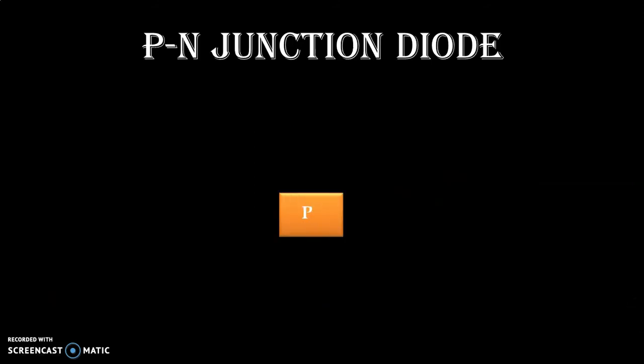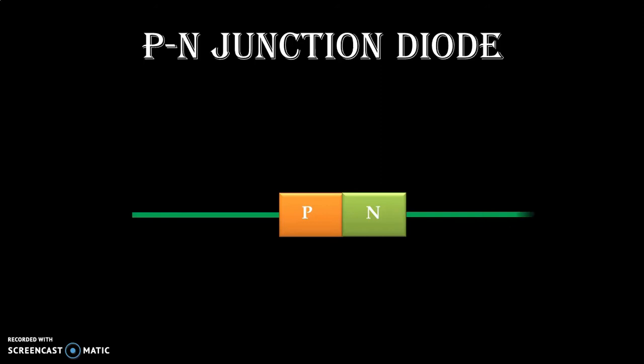We have P type semiconductor at one end and adjoining N type semiconductor at the other end, and it is known as a PN Junction Diode. One terminal is brought out from the P type semiconductor — that is known as anode — and one terminal is brought out from the N type semiconductor — that is known as cathode. Depending upon the applied voltage, the PN Junction Diode has two different biasing modes: one is forward biased and one is reverse biased.